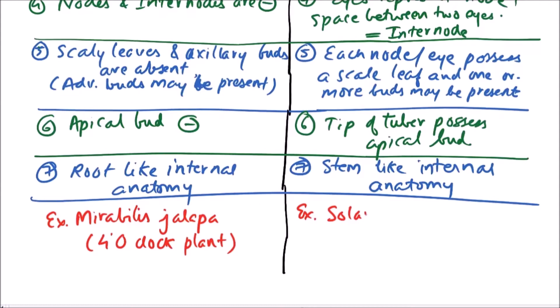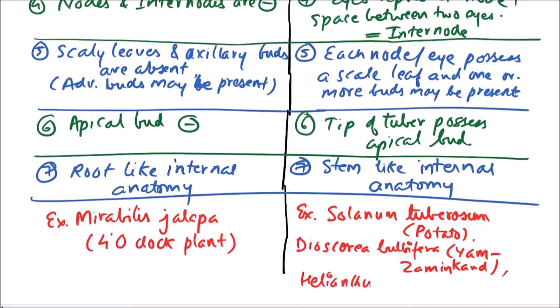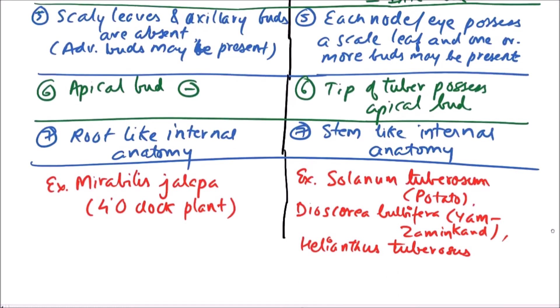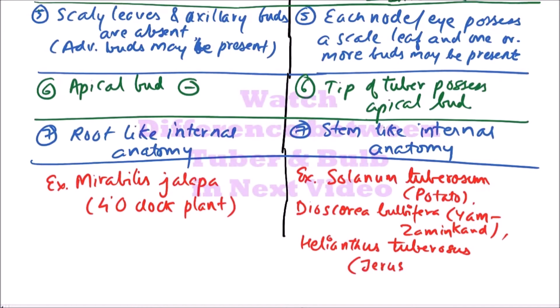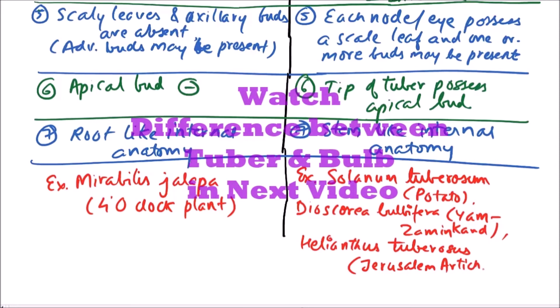Examples of stem tuber include Solanum tuberosum, commonly known as potato; Dioscorea bulbifera, also known as yam or zaminkand; and Helianthus tuberosus, also known as Jerusalem artichoke.